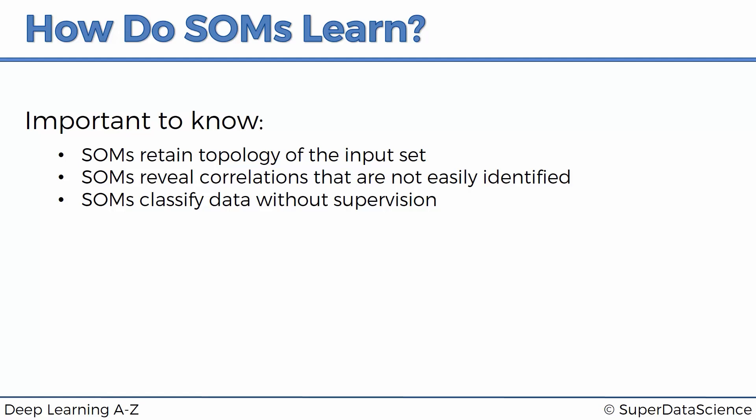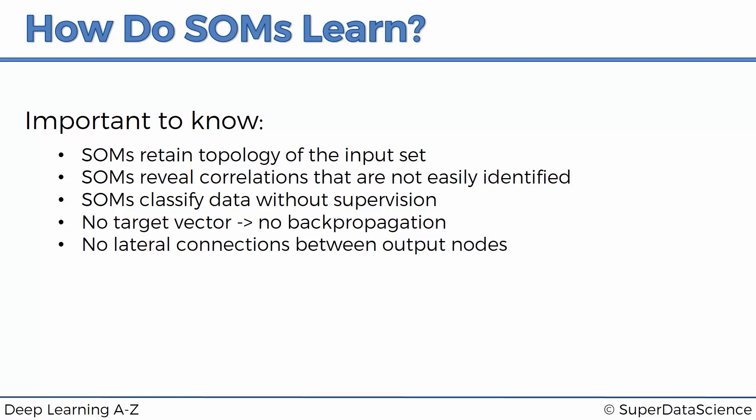SOMs can be used in scenarios where you don't know what you're looking for but want to find any kind of correlations in your data. SOMs don't require a target vector — the same as not needing supervision — and as a result there is no process of backpropagation. In artificial neural networks, data goes through the network, you get a result, compare it to the target vector, find the error, and backpropagate that error to update the weights. Here, none of that happens because we don't have a target vector and there is no error to backpropagate.